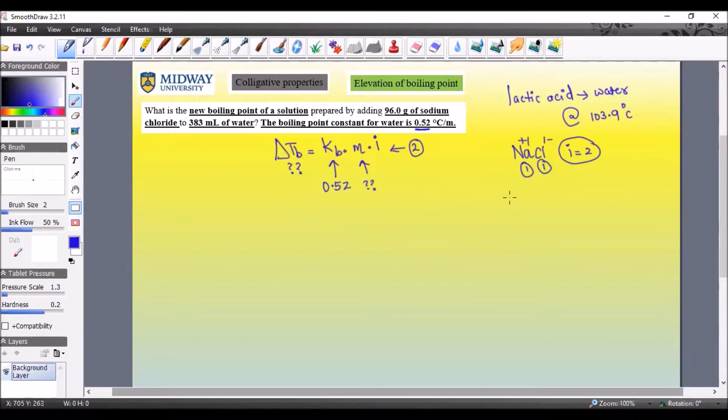So we have to find the molality before we can solve the complete problem. Let's switch colors so we can do the calculations in a different color. We have 96 grams of sodium chloride, and sodium chloride's molar mass is 58 grams per mole, because we're trying to find the molality of the solution.